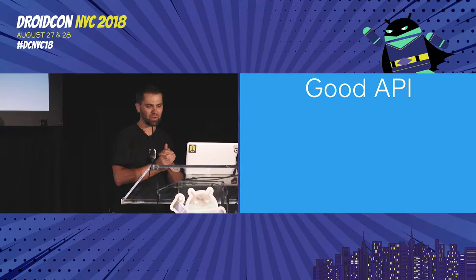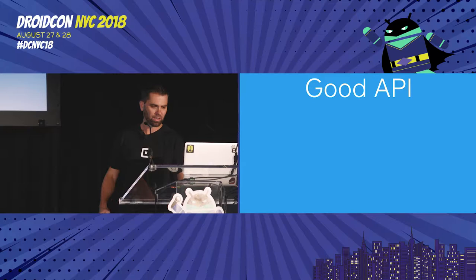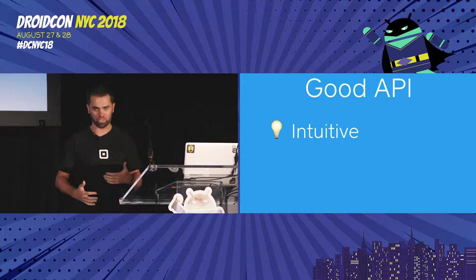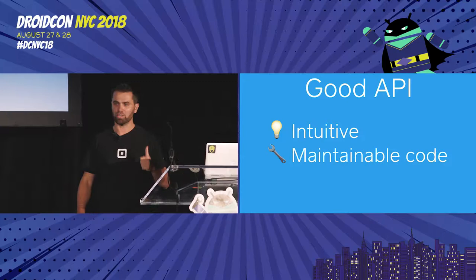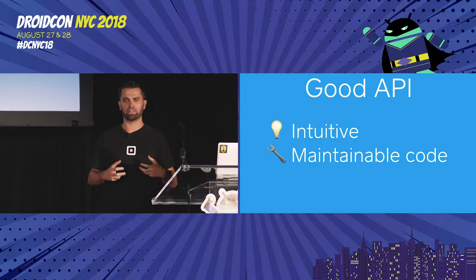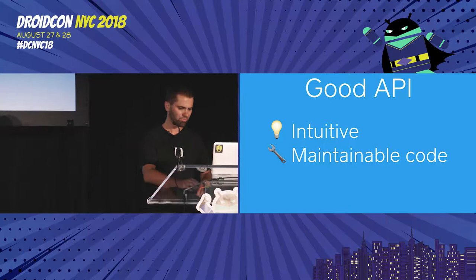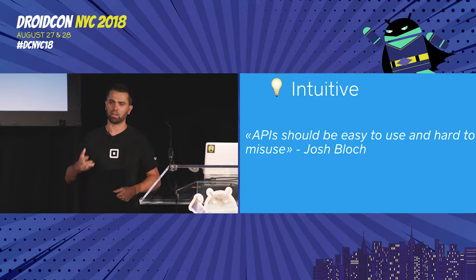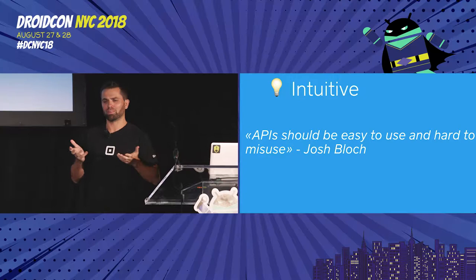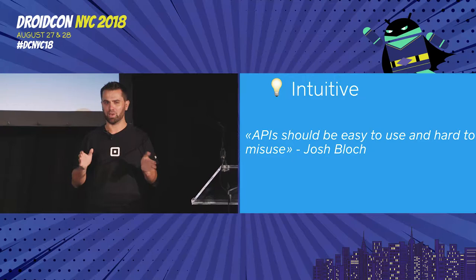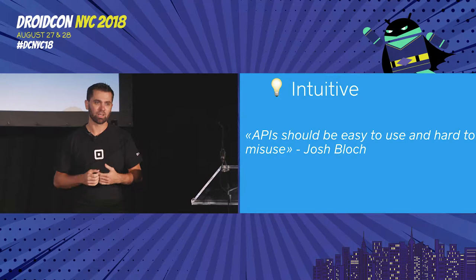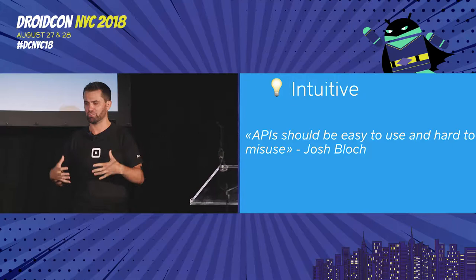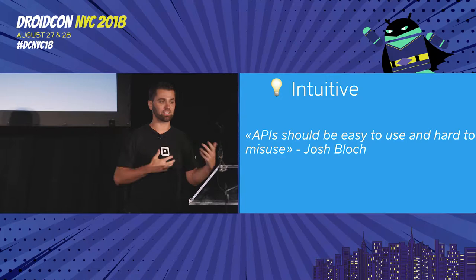What is a good API? I think it's just two things. First, it's intuitive — when I see it for the first time, I know how to use it. Second, it gets me to write maintainable code. There's a great quote from Josh Bloch: APIs should be easy to use and hard to misuse. When you say something is easy to use, you have to think about context — who's the person using it and what do they know?